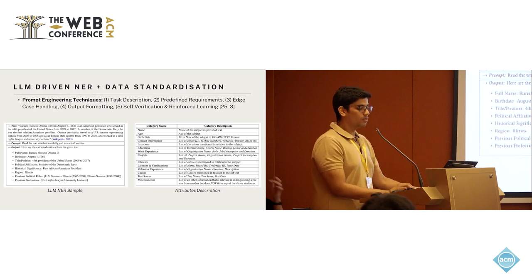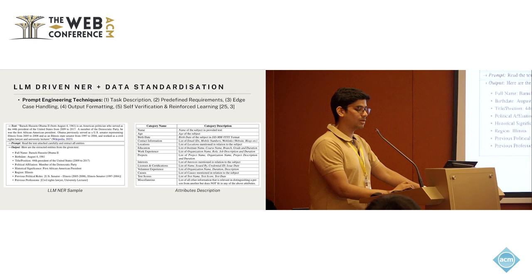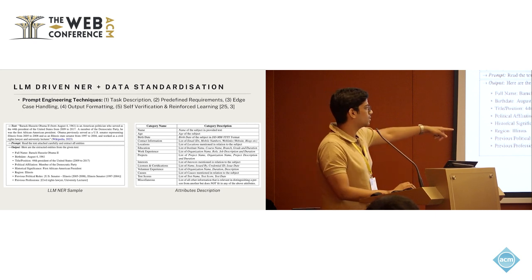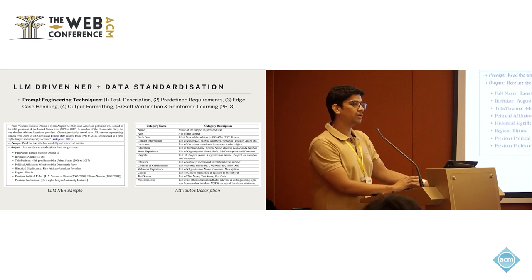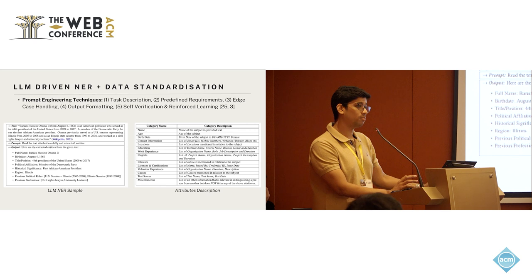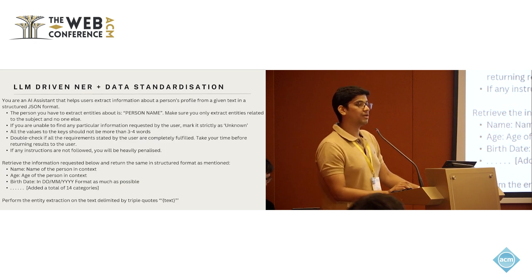The output is human-readable but not computer-readable. To refine the GPT results and engineer them for our NER tasks, we employ multiple techniques suggested by previous researchers, including task description, pre-defining requirements, edge case handling, output formatting, self-verification, and reinforced learning. After that, we developed a prompt which extracts 14 different attributes — listed in the table on the right — which we feel are sufficient to capture all information given about a person. More entities can be added or reduced based on the use case.